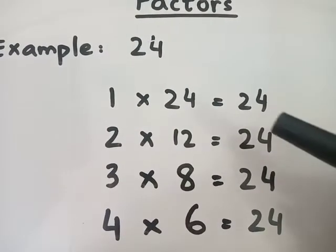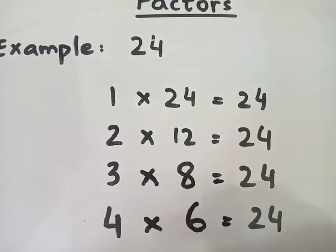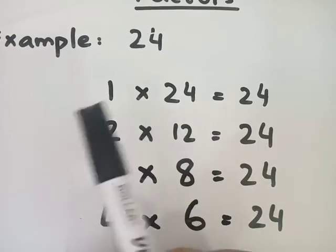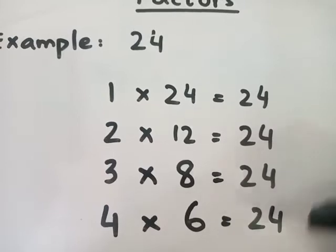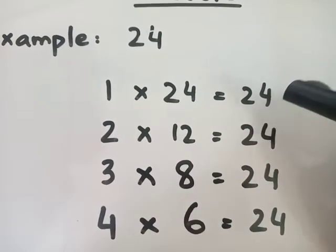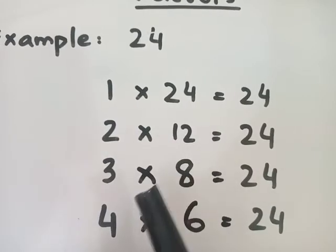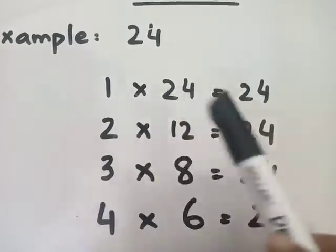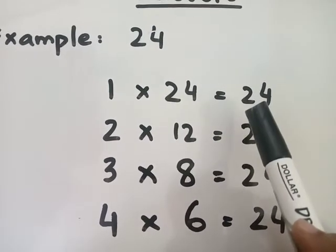Just pay a little attention here. Then you will understand what basically factors are. What we have done here? We have just multiplied certain numbers with one another and what we have got? We have got the answer 24 in every multiplication, right? We have just multiplied two numbers and every time we got the product 24. So what are the factors of 24?